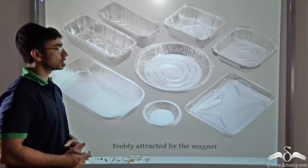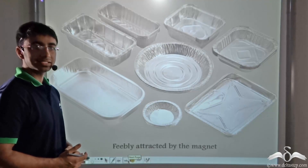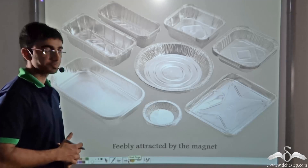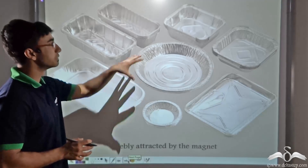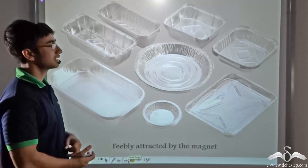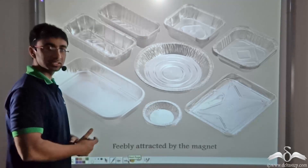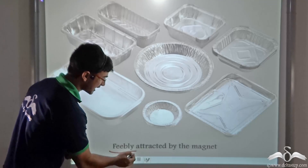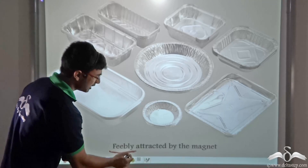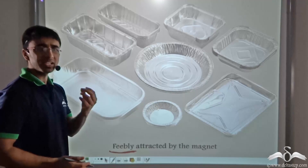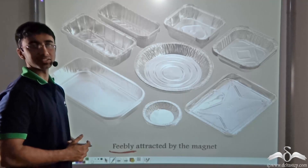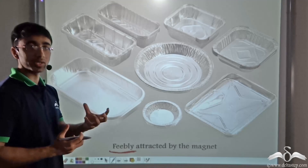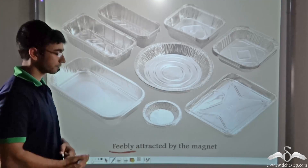On the contrary, if you take this magnet near any aluminium utensil or aluminium foils like the ones you see in the picture, you will find that these are attracted but only feebly attracted by the magnet — not as strongly as the coins or the nails were attracted.